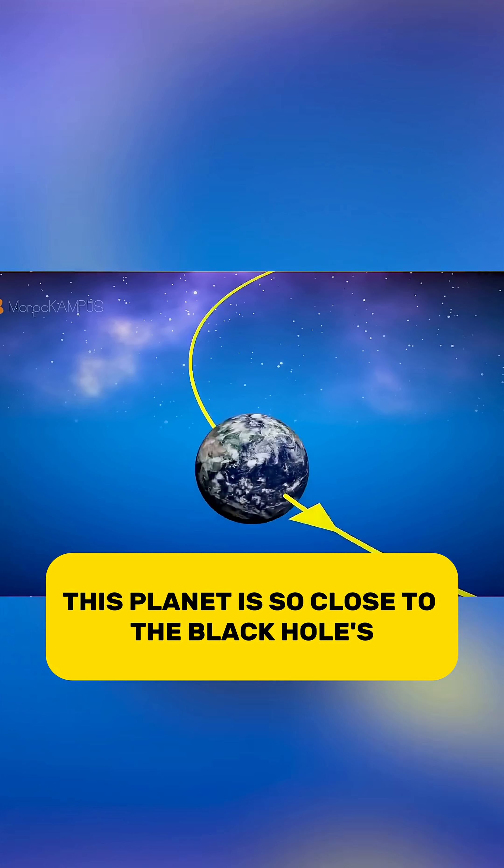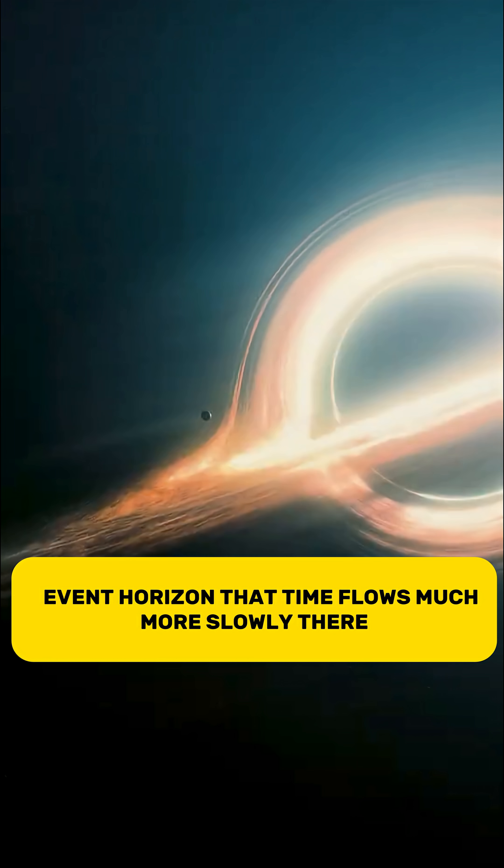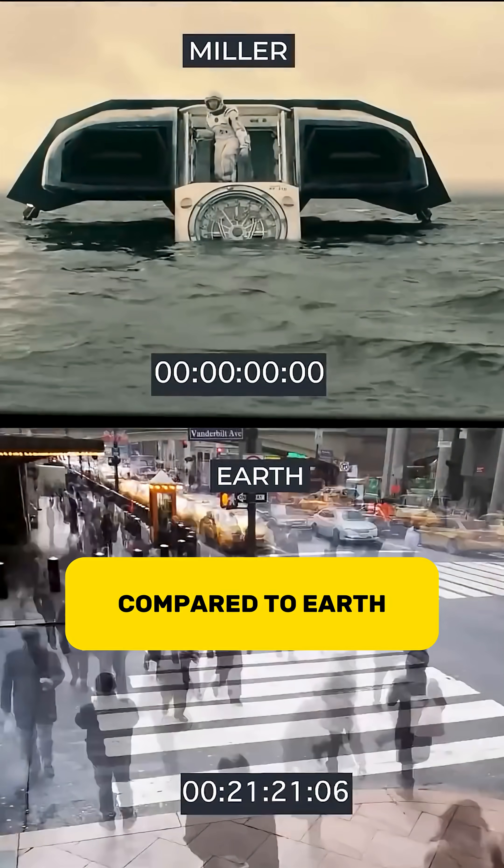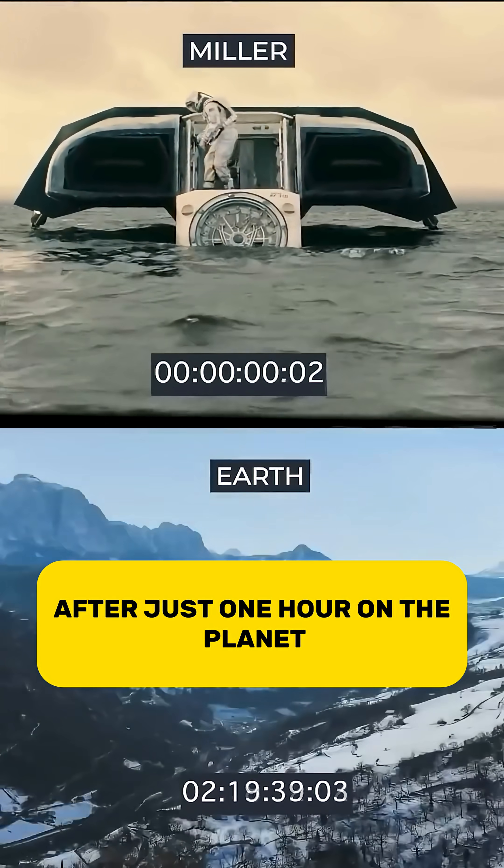This planet is so close to the black hole's event horizon that time flows much more slowly there compared to Earth. After just one hour on the planet, seven years pass on Earth.